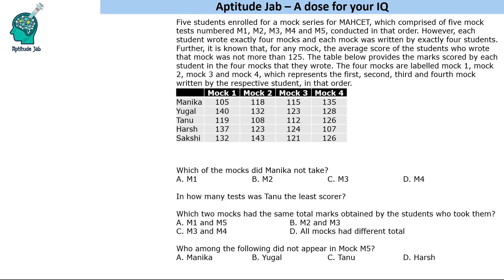Welcome to Aptitude Lab. This is a logical DI question. There are 5 students enrolled for a mock test series for Maharashtra CET. That series has 5 mocks numbered M1, M2, M3, M4, and M5, conducted in that order. Each student wrote exactly 4 mocks, and each mock was written by exactly 4 students. The table provides the marks scored by each student in the 4 mocks that they wrote, labeled Mock 1 through Mock 4, representing the first, second, third, and fourth mock written by each respective student.